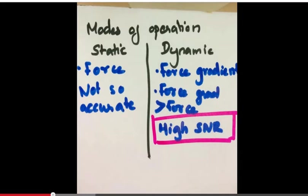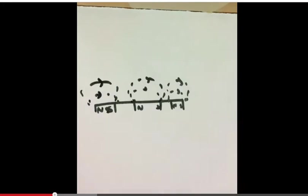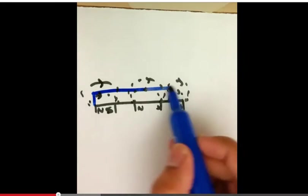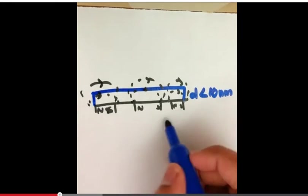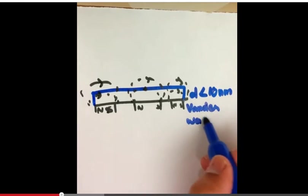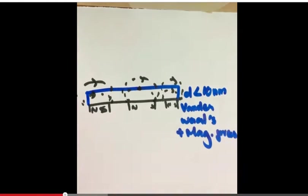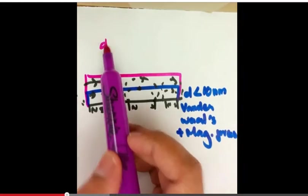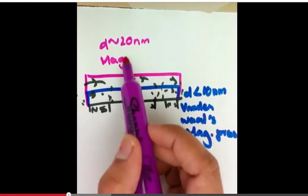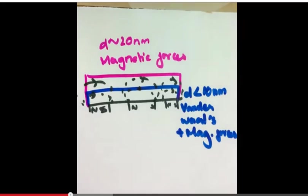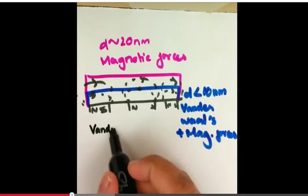When the cantilever is near the surface, at a distance less than 10 nanometers, it is under the influence of Van der Waals forces and magnetic forces. But when the cantilever is raised to a distance of approximately around 20 nanometers or more, it is primarily under the influence of magnetic forces.